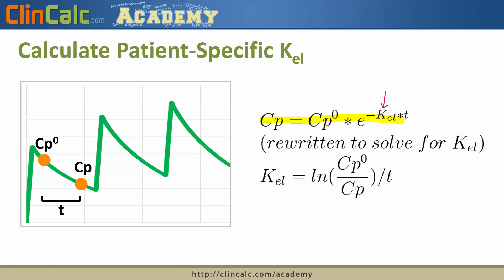The terms in the equation here are shown on the slide to the left, but we have a lower level, typically a trough level, a higher level, typically a peak level, and a known time between those two levels. Using the rewritten version, you can solve for a patient-specific elimination constant that is really not an estimate, but a true calculation of that patient's pharmacokinetic parameter.